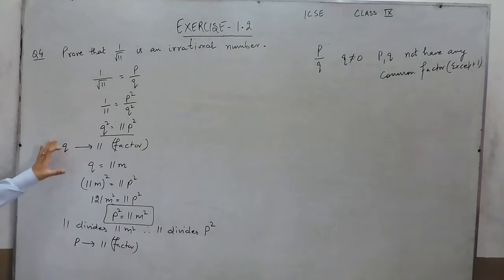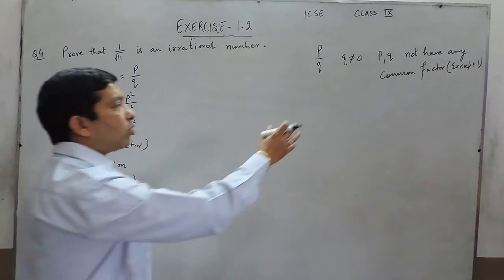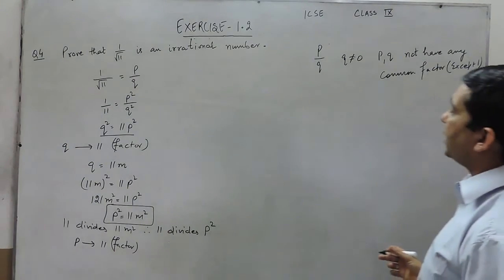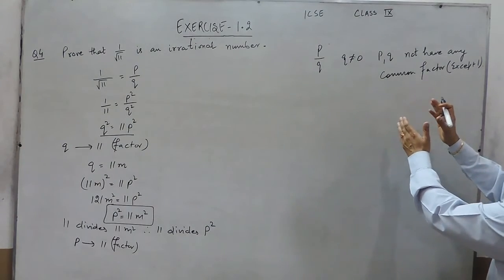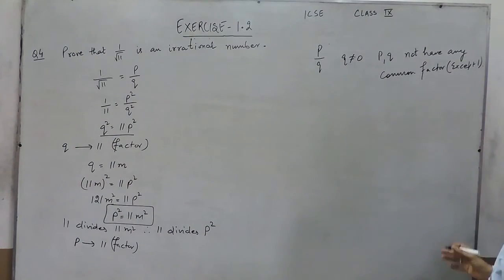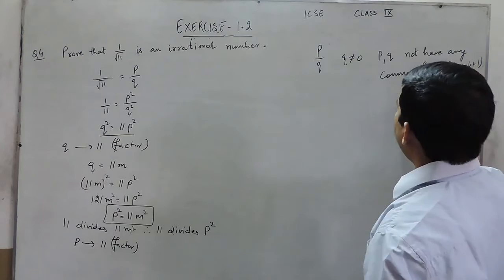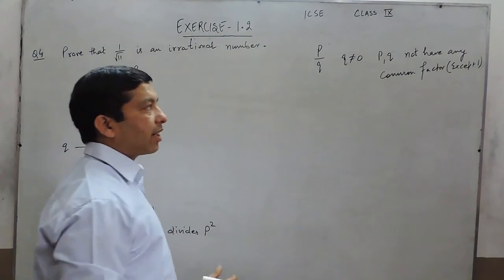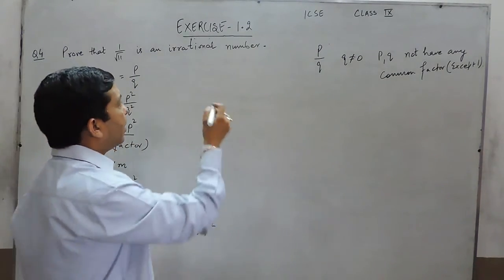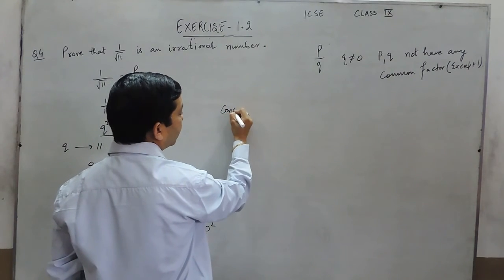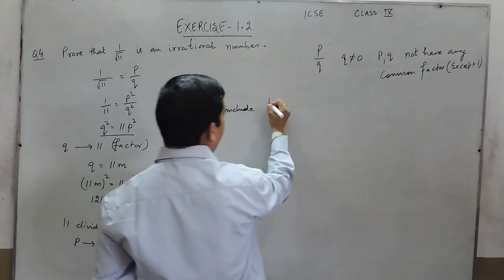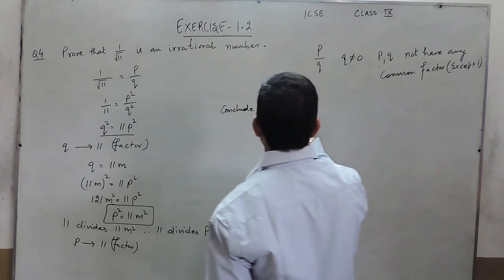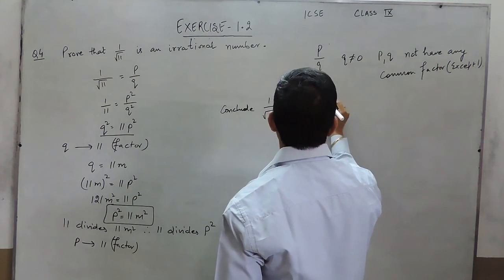It means P and Q both are having a common factor 11. And according to our definition of rational number, P and Q should not have any common factor except 1. It has a common factor 11, that means it is contradicting our definition of rational number, or we can conclude that 1 upon under root 11 is not a rational number.